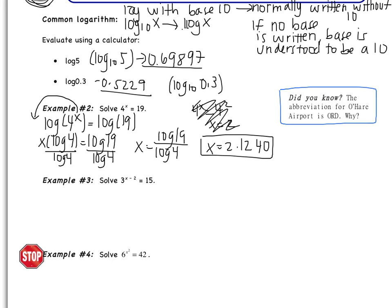Example number 3 says, 3 to the power x minus 2 equals 15. Now, I can't write 3 or 15 in terms of the same base. So I can't get 3 to the power x minus 2 equals 3 squared, or 3 to the 4th. There's no way to get the right side of the equation to be in terms of 3 to some power. You know, it's not going to be 3 squared, or 3 to the 3rd, or 3 to the 4th. So because of that, I'm going to take the log of both sides.